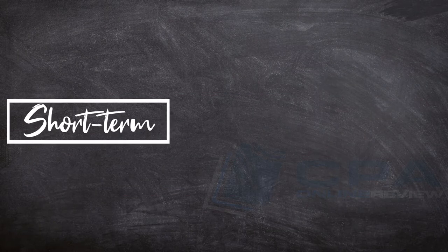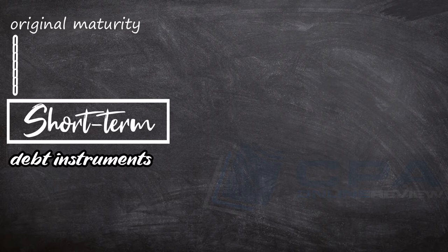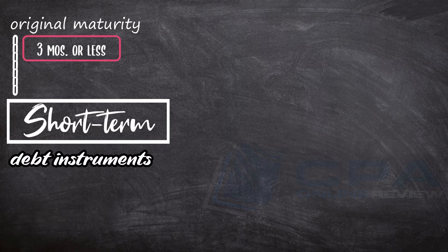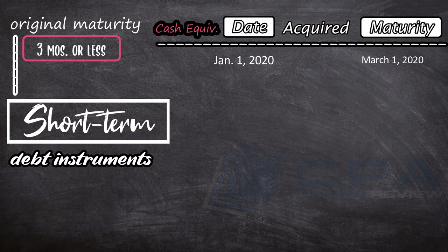Short-term: cash equivalents must be short-term in maturity. Since maturity is involved, cash equivalents are debt instruments. Debt instruments are cash equivalents if their original maturity is 3 months or less. For example, an instrument dated January 1, 2020, matures on March 1, 2020 — the original maturity is 3 months.